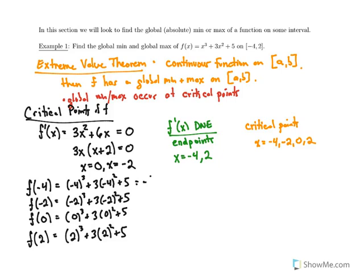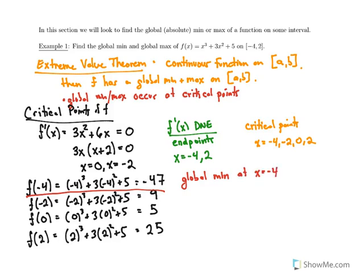When we plug in -4 we get -47; plug in -2 we get 9; plug in 0 we get 5; and when we plug in 2 we get 25. So the global min occurs at x = -4 since -47 is the smallest value, and the global max occurs at x = 2 since 25 is the largest value. This is the process of optimization — minimizing or maximizing a function on a closed and bounded interval like [-4, 2].